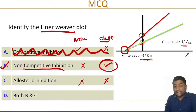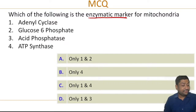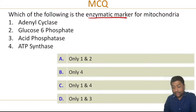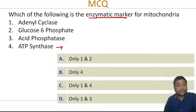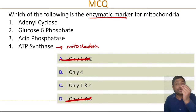Let's look at the next question — a previous exam question. Which of the following is an enzymatic marker for mitochondria? Options are: adenyl cyclase, glucose-6-phosphatase, acid phosphatase, ATP synthase. You can type your answer in the live chat. Looking at each option: ATP synthase — we know it is a mitochondrial enzyme, so option four is correct. That rules out options two and three right away. This is how you solve exam questions — identify the clear answer first.